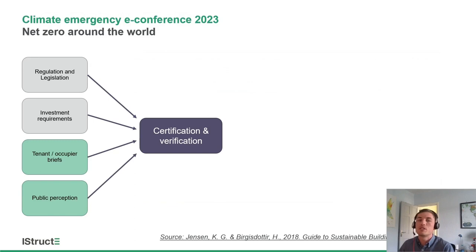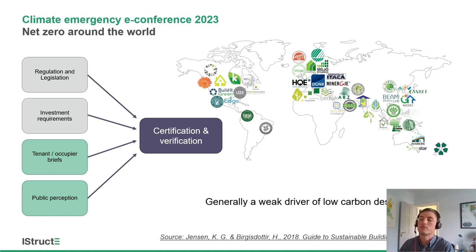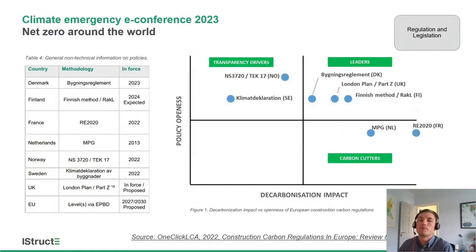As part of that, these different drivers — investment requirements, regulation, legislation, tenant or corporate briefs, and public perception — also point us towards certification and verification: how do we prove that our buildings are actually green and on a good net zero pathway? There's quite a variety of different voluntary schemes used internationally. However, looking at our recent work, in terms of net zero embodied carbon they're not particularly well aligned — certifications give a broad picture of sustainability but aren't set up specifically to drive net zero embodied carbon in structures on projects.